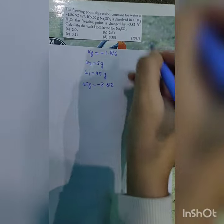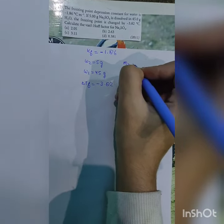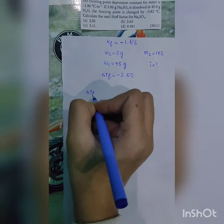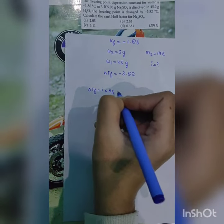Calculate the Van't Hoff factor for Na2SO4. The molar mass of Na2SO4 is 142. We know that depression in freezing point is equal to i into Kf into M.